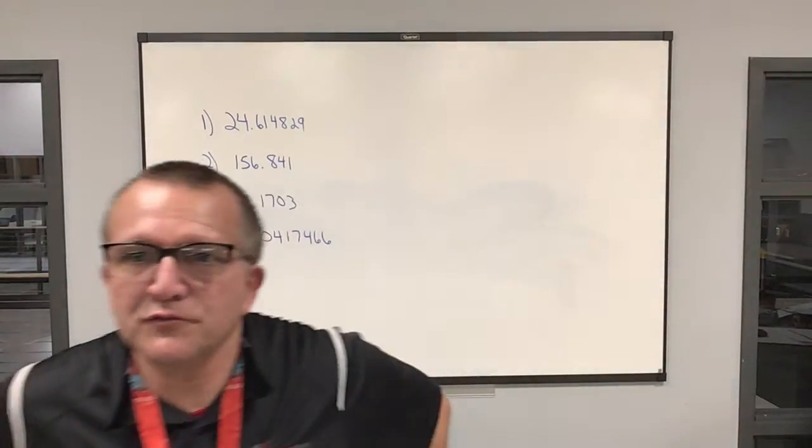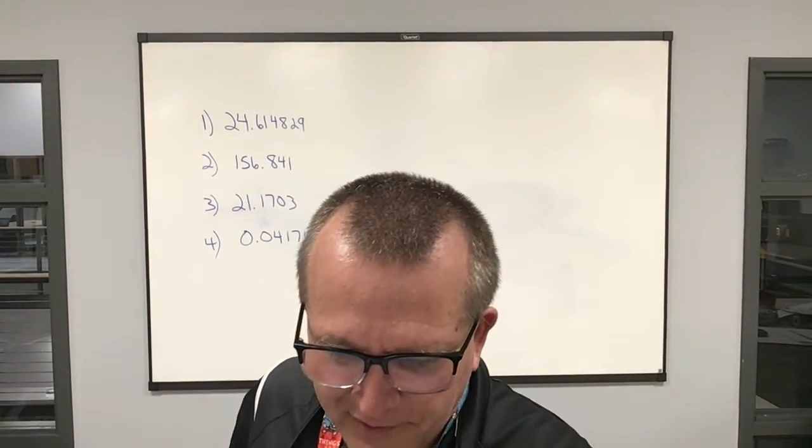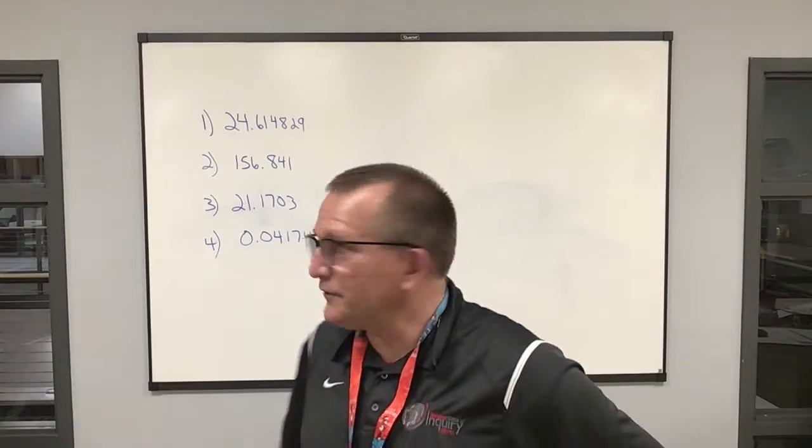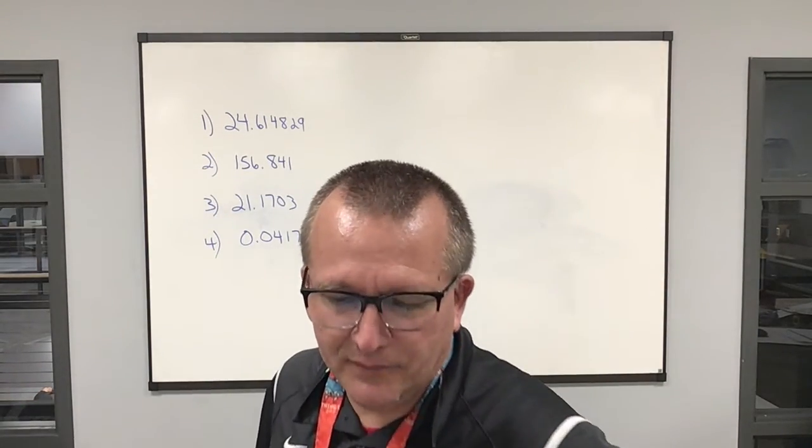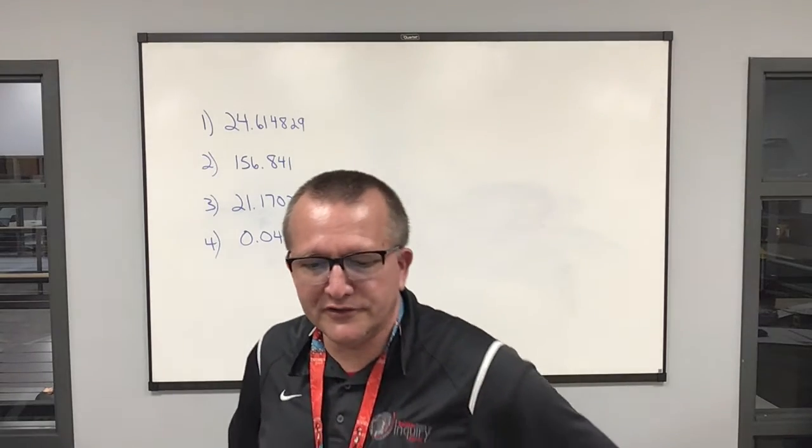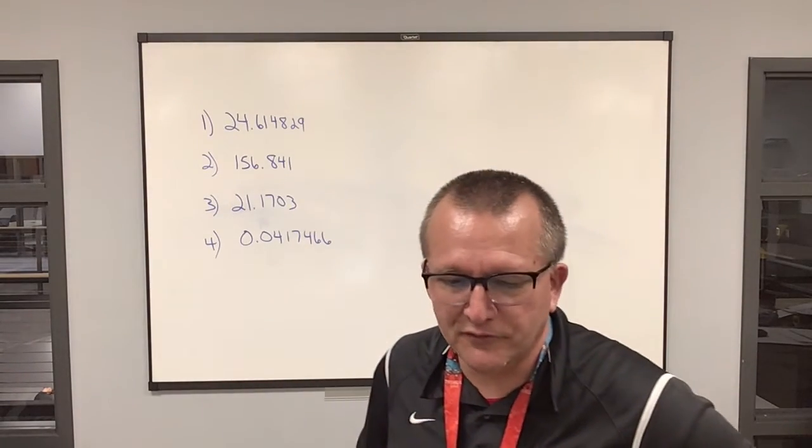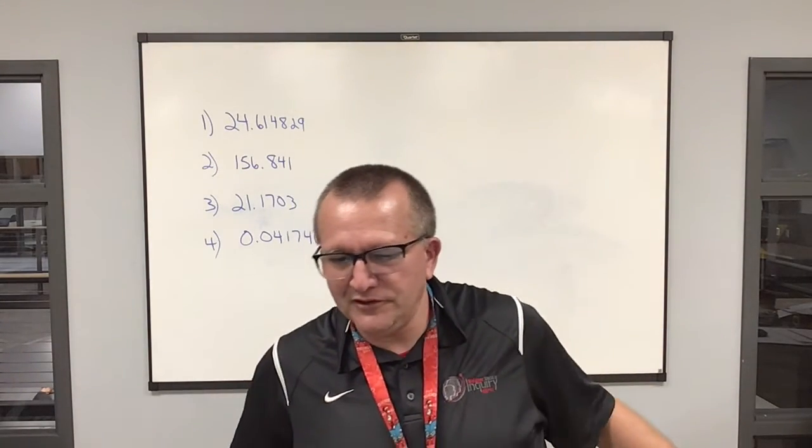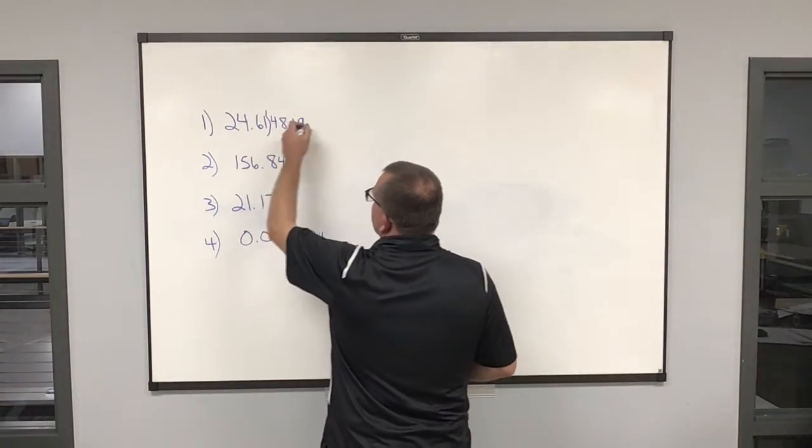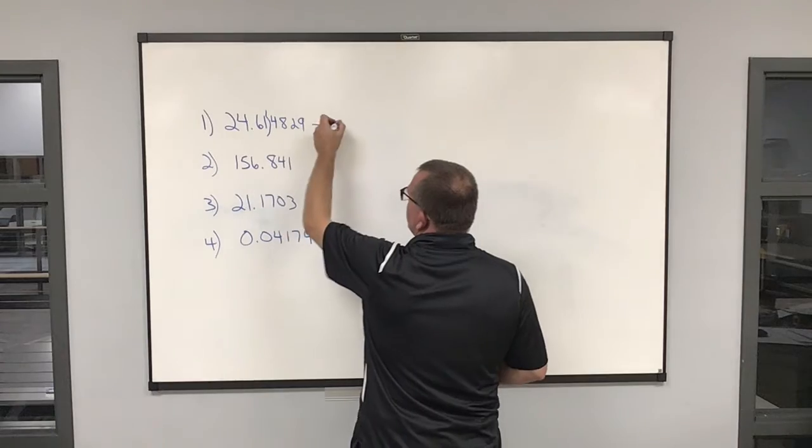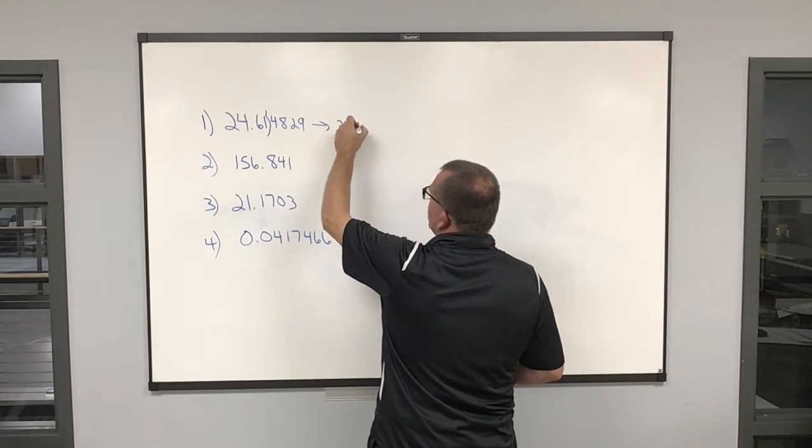Okay, so the addition-subtraction problems, the examples, I typed them in the calculator and got these answers, talked about what I would round to in the examples earlier, so I'm just going to show you how we would round the number then. So for number one, we want to round to the two places after the decimal. So I want to round to here. Four tells me to leave it alone, 24.61.